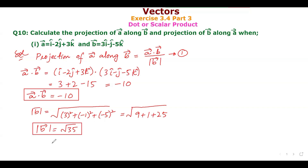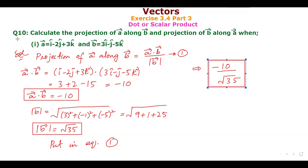Putting these values into equation 1 — projection of A along B = A·B / |B| = -10 / √35.